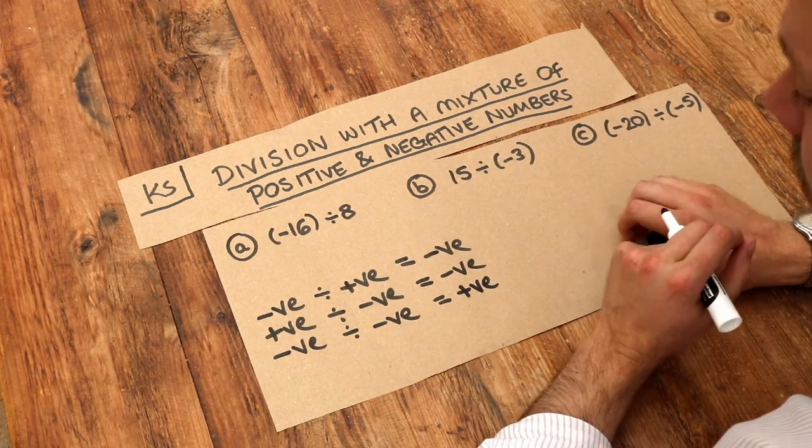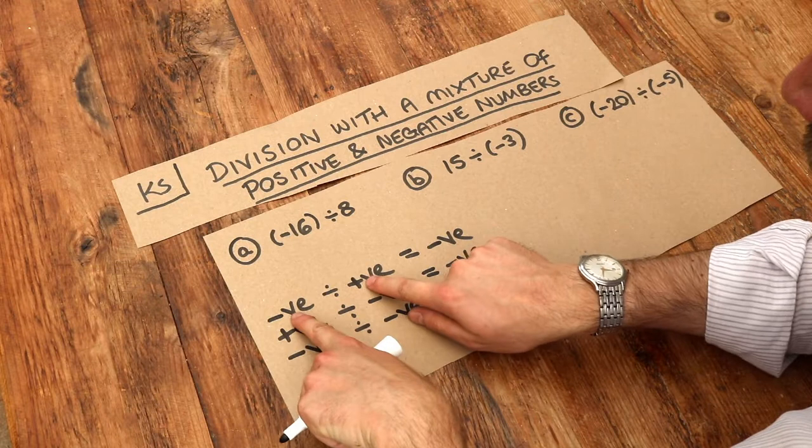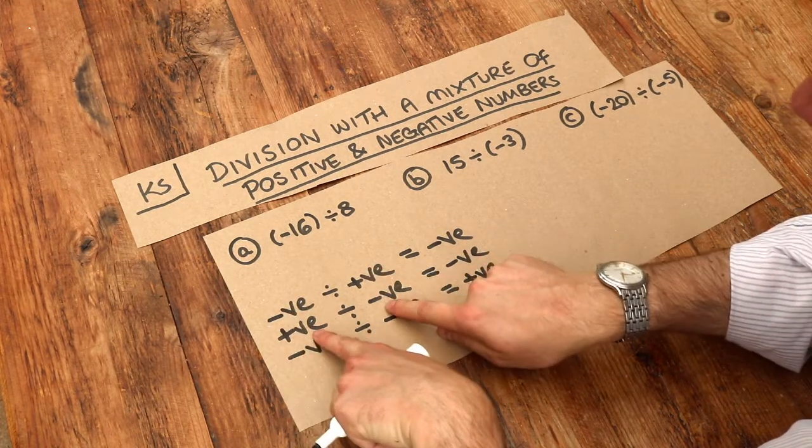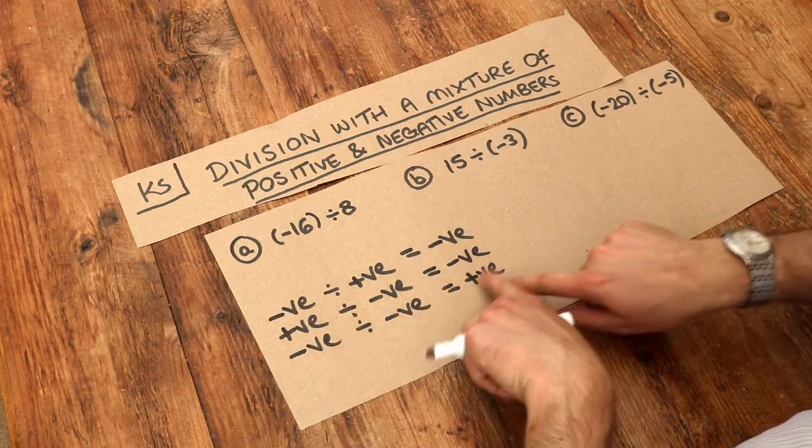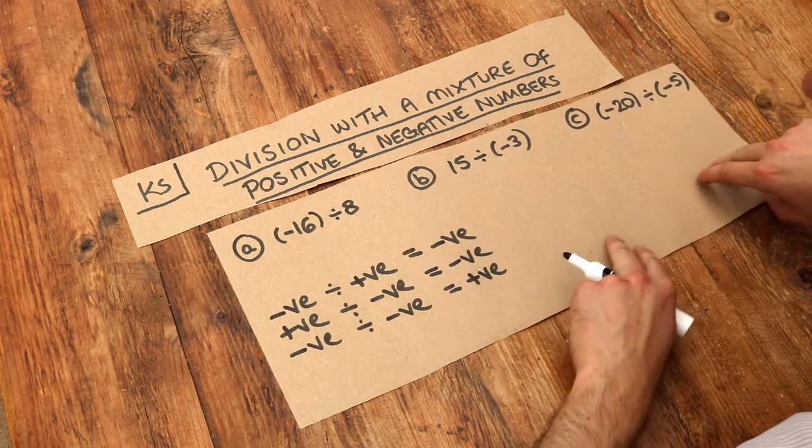It's exactly the same with multiplication. If one of them is positive and the other negative, as in these two cases, you end up with negative. But if they're both negative, you end up with a positive number. Exactly the same as multiplication.